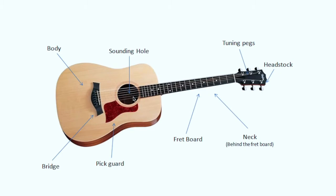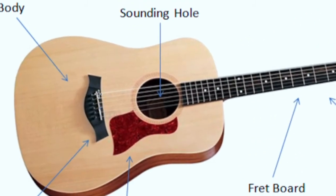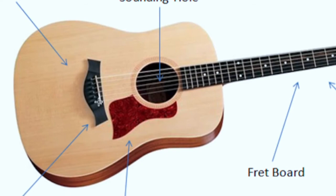This hole is used so that all the sounds from the strings resonate in the air inside the body — that's how an acoustic guitar produces sound. That's why it is known as the sound hole or sounding hole.